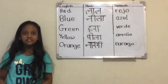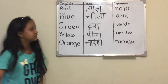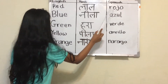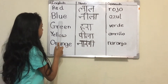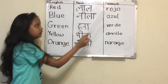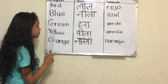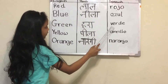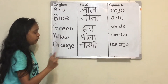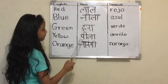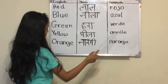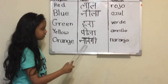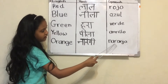So let's take a look again. Red, Lal, Rojo. Blue, Neela, Azul. Green, Verde. Yellow, Pila, Amarillo. Orange is Narangi.